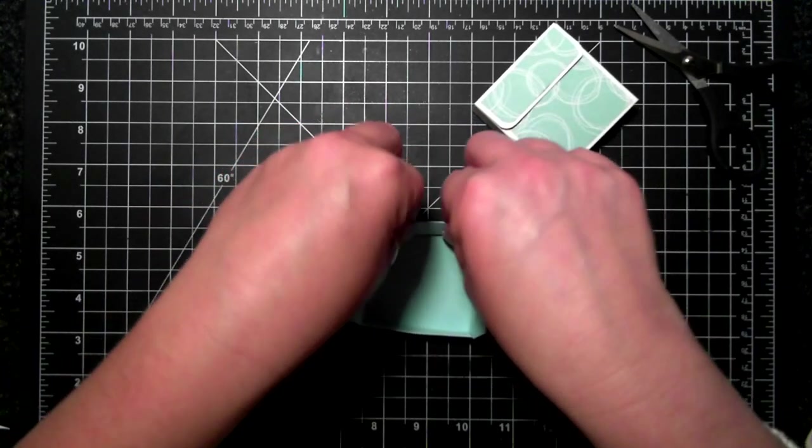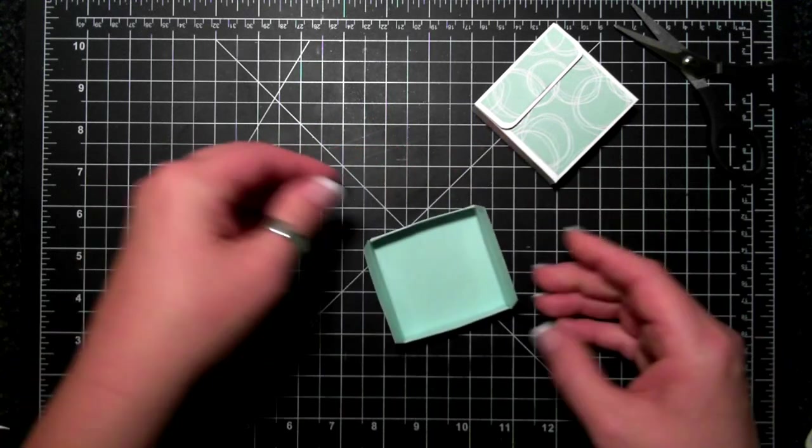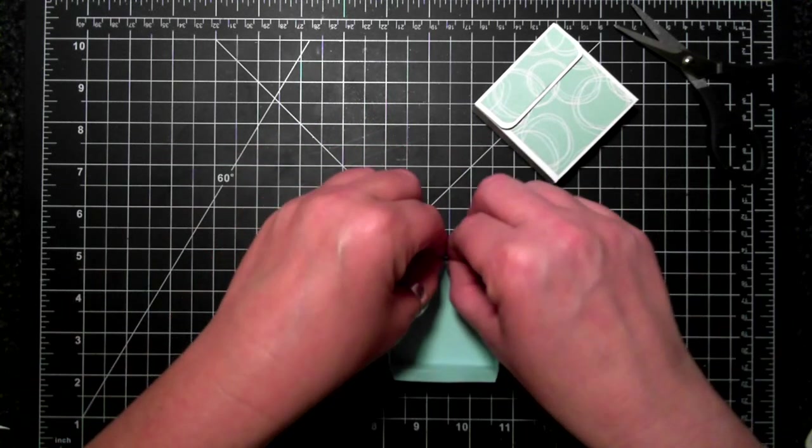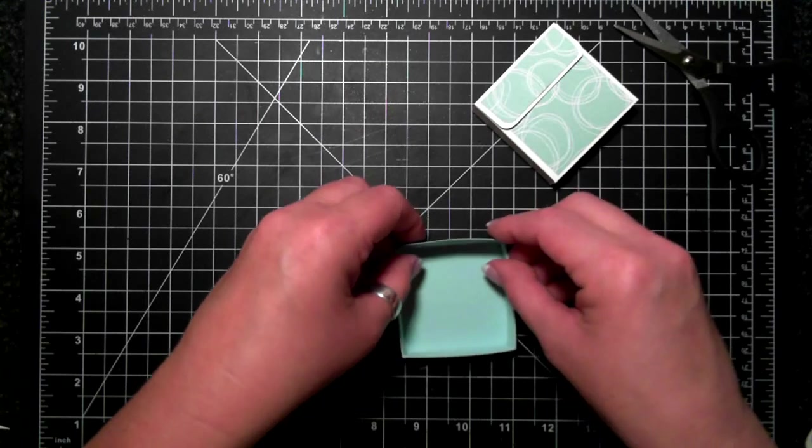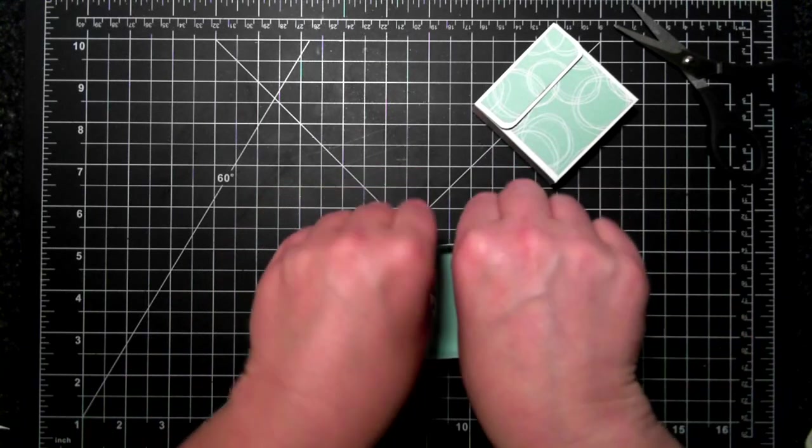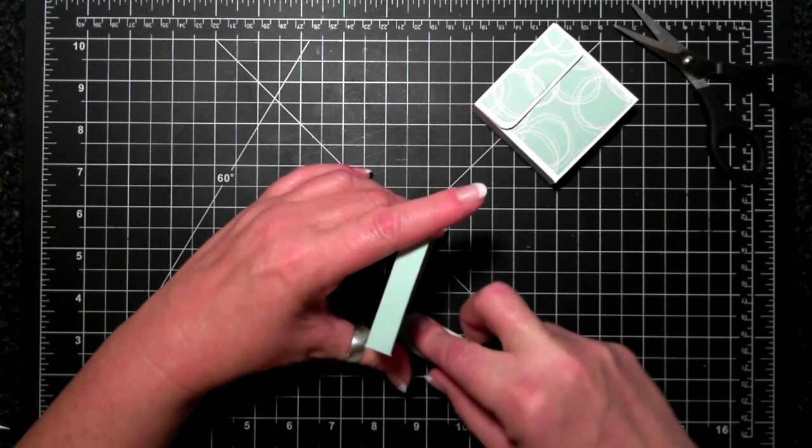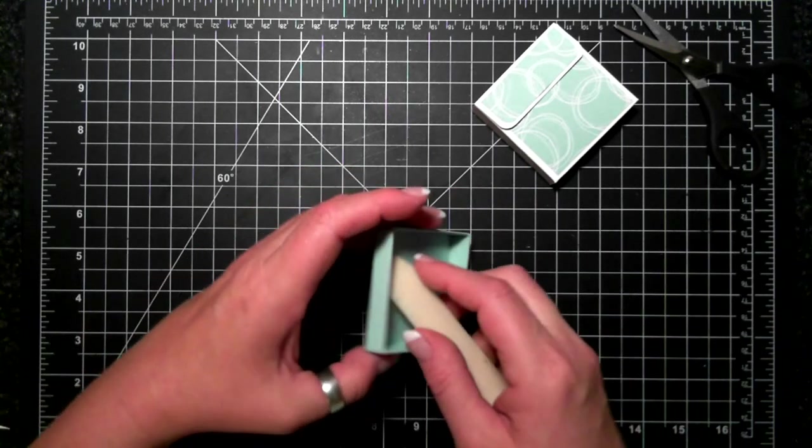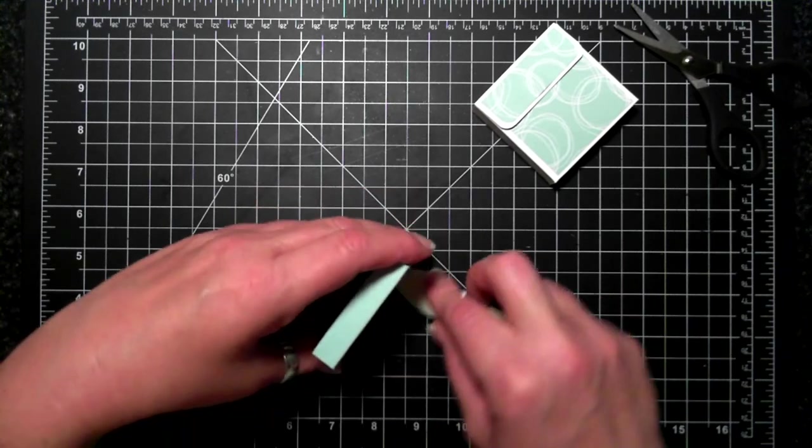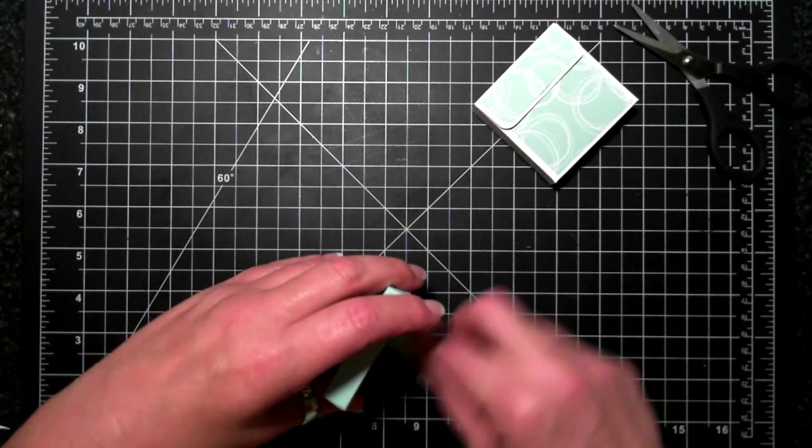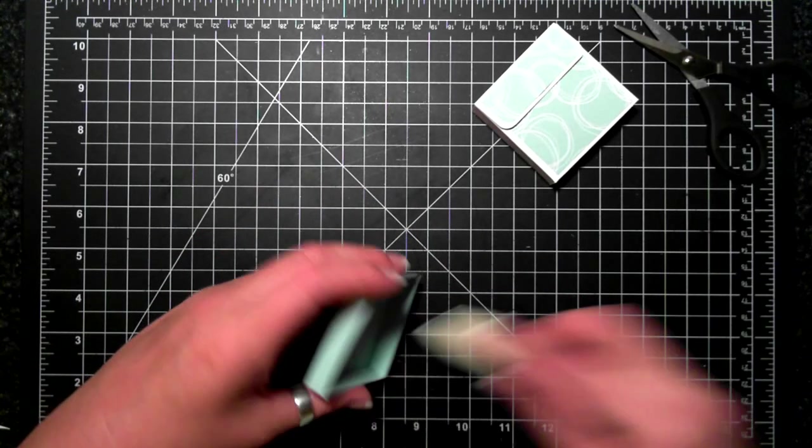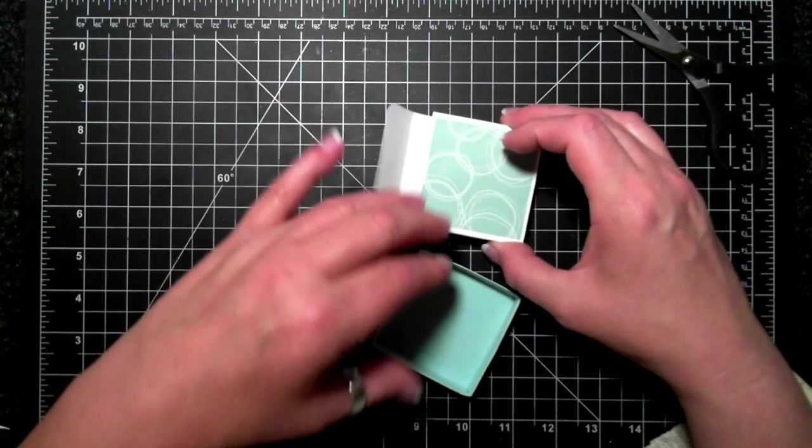So this is just like an open box, and I only wedged two sides and not all of the sides. I'm going to press it all down, making sure. Okay, moment of truth.